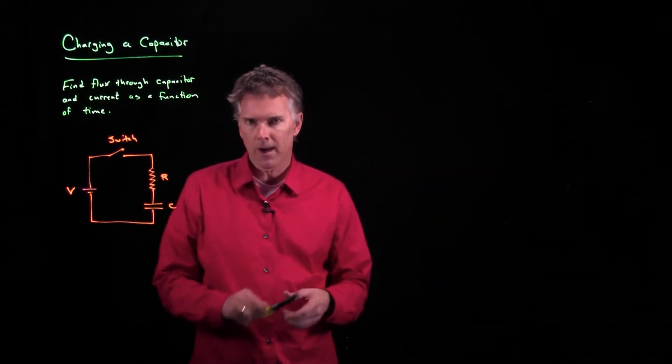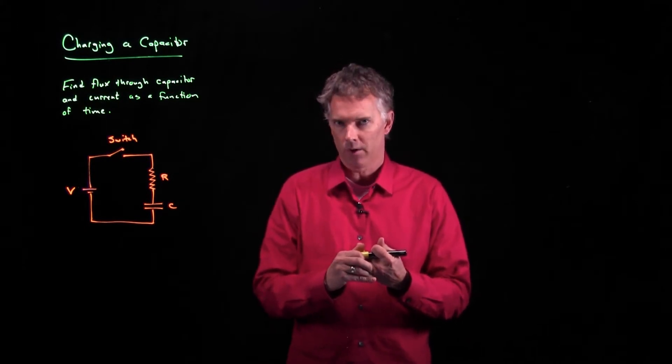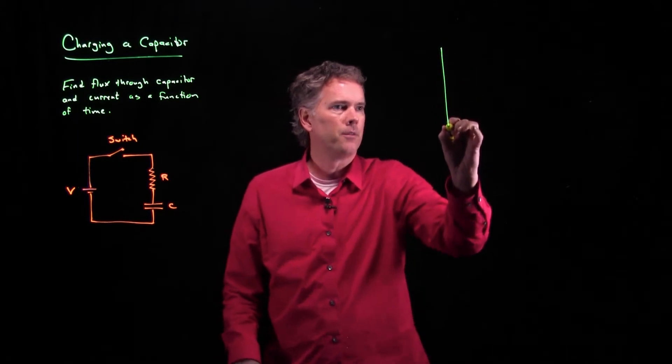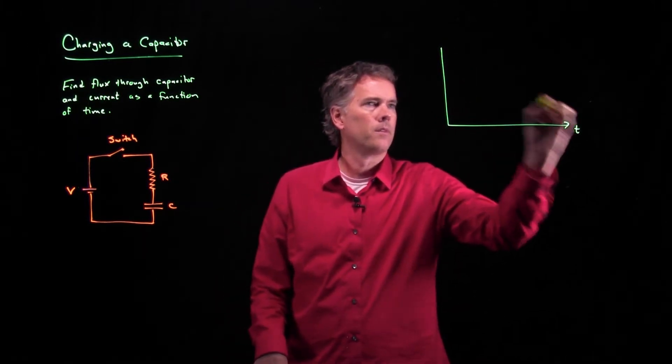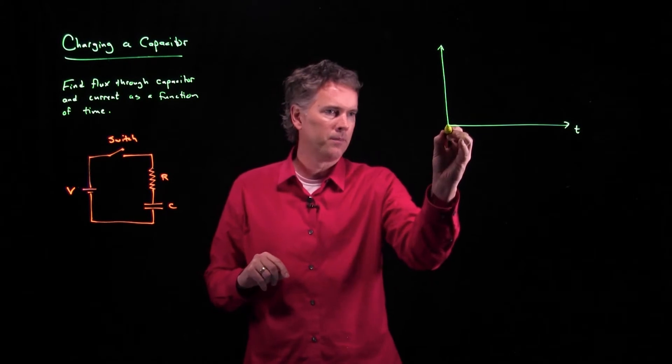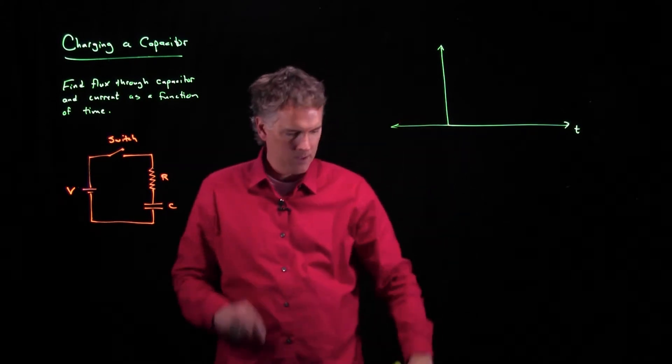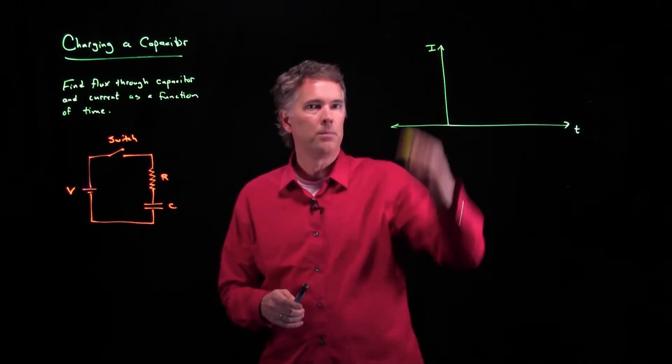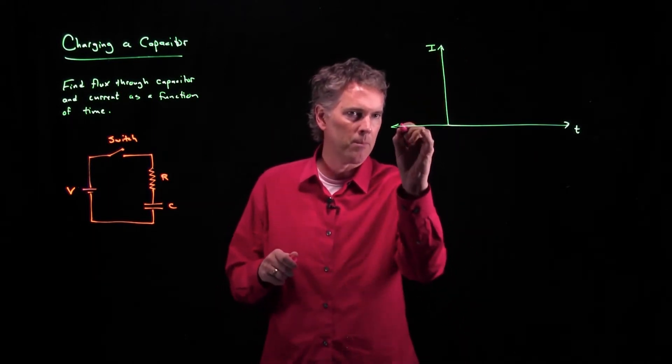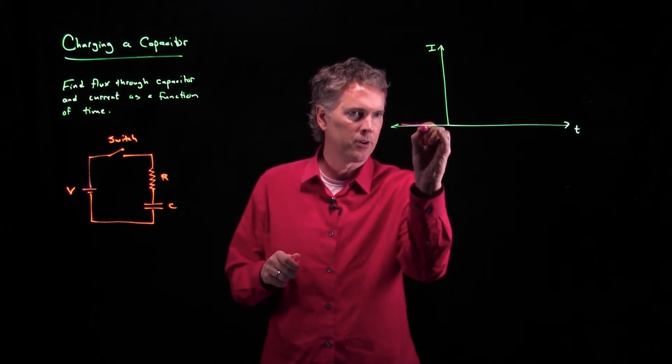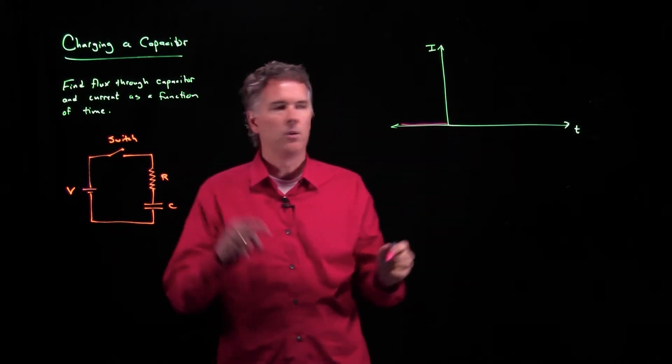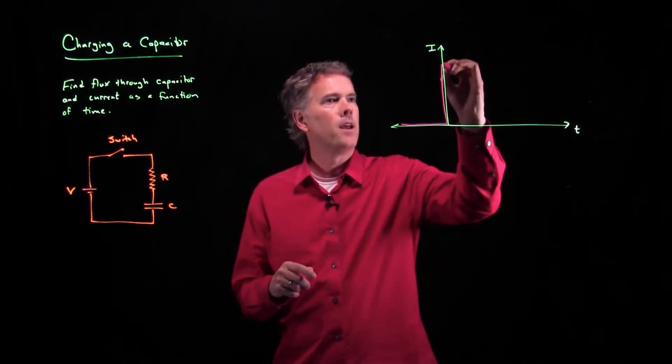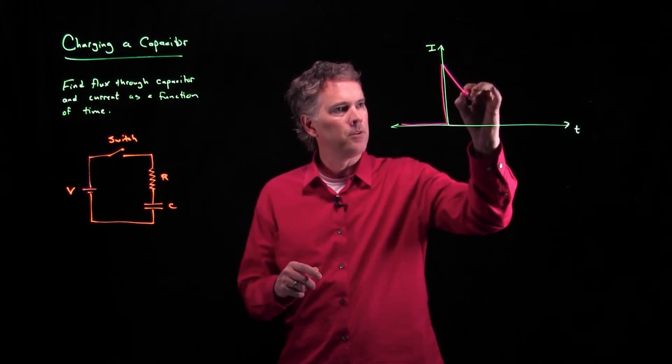So let's think about broadly what we think that current is going to look like. Well, if we have a circuit and the switch is open, then current is going to be zero up until we close the switch. So here we are marching along in time, we're at zero current, and then all of a sudden we turn on the switch, it jumps up to some maximum level, and then we know what happens. It decays.